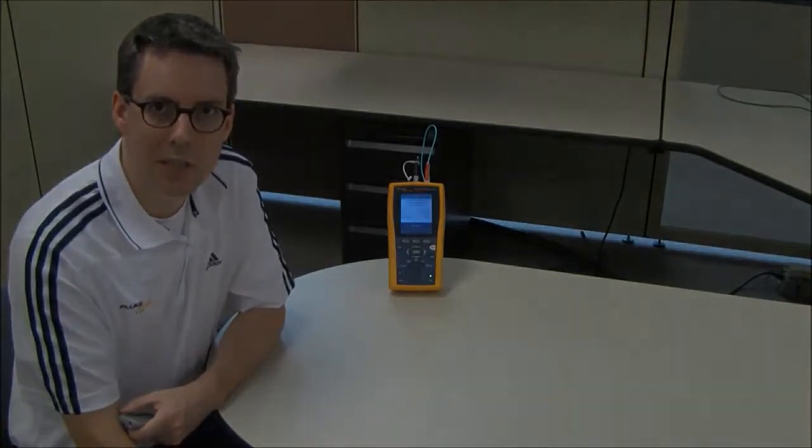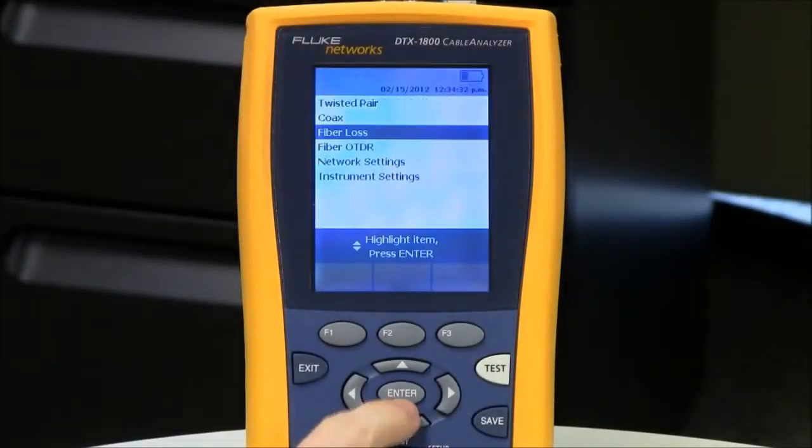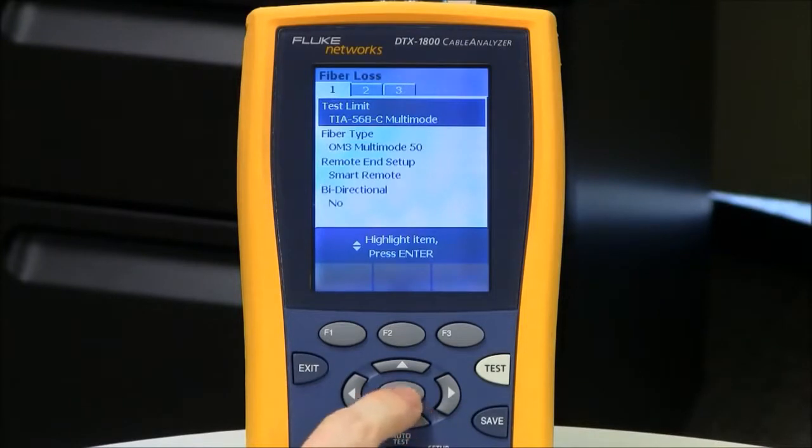So let me show you how you do that on the DTX cable analyzer. I'm going to rotate the dial to Setup, and with fiber loss highlighted, I'm going to hit the Enter key. And with Test Limit highlighted, I'm going to hit the Enter key again.